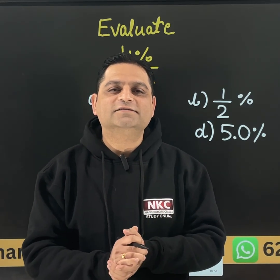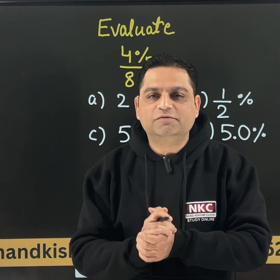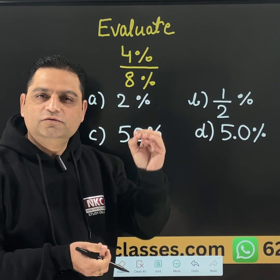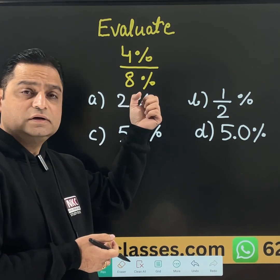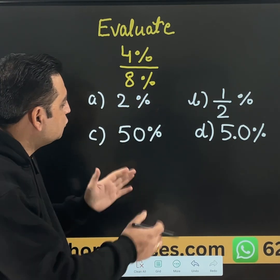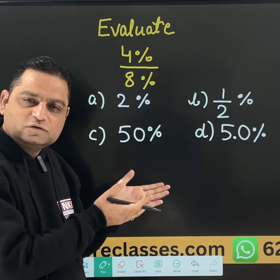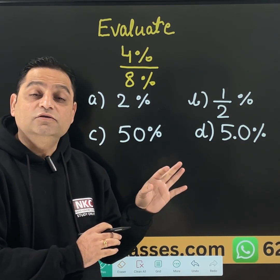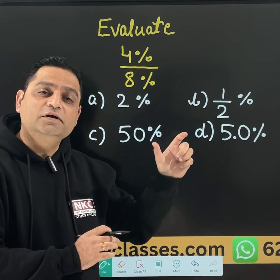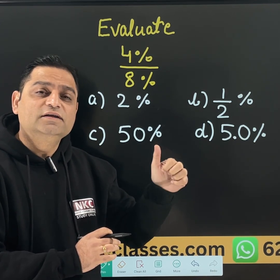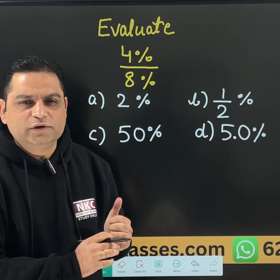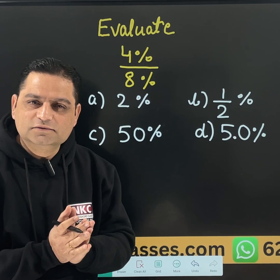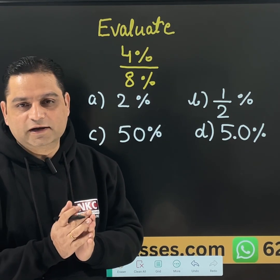Hello friends, welcome to Nankeshwar classes. Today's lecture is going to be very interesting. Look at the question on the board: Evaluate 4% over 8%. You are having 4 options from where you need to select the correct one. This question is actually very simple and usually examiners give it in competitive exams to check the understanding of concepts, and many students do make mistakes here. Please try doing this question and let us see whether your understanding is correct or not.